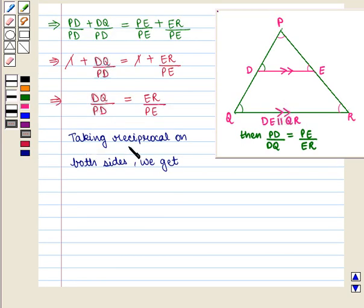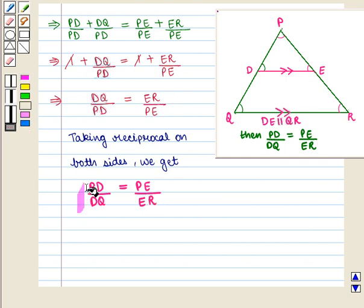Now, taking reciprocal on both sides, we get PD upon DQ is equal to PE upon ER. Hence, we have proved the required result.